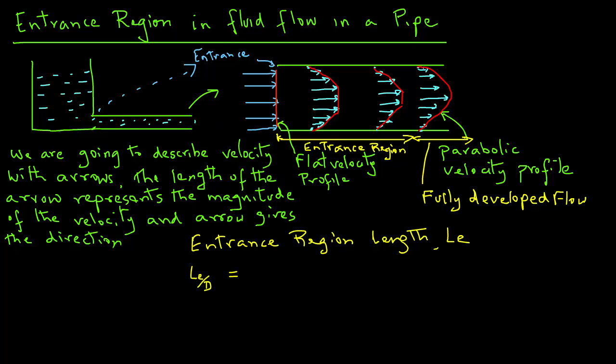Then it has been shown experimentally that LE over D equals 0.06 times Reynolds number, and we call NRE as Reynolds number. This is the way to calculate the entrance region or the length of pipe where the velocity profile is still developing into a parabolic shape. This expression is good for laminar flow.